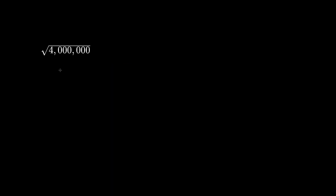What is the square root of 4 million? The answer is 2,000, because 2,000 times 2,000 is 4 million. Three zeros plus three zeros is six zeros.